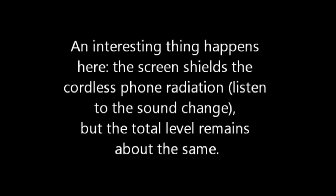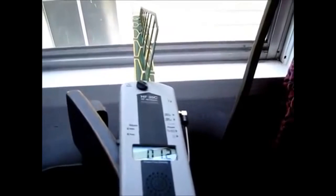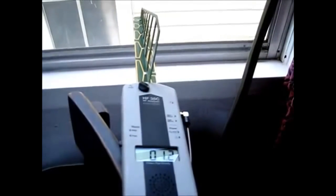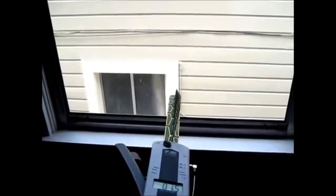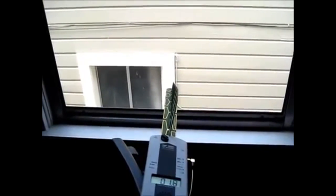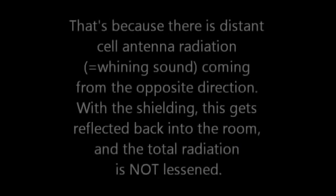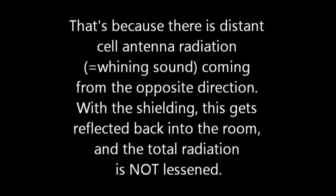An interesting thing happens here. The screen shields the cordless phone radiation, but the total level remains about the same. That's because there's distant cell phone radiation coming from the opposite direction. With the shielding, this gets reflected back into the room.